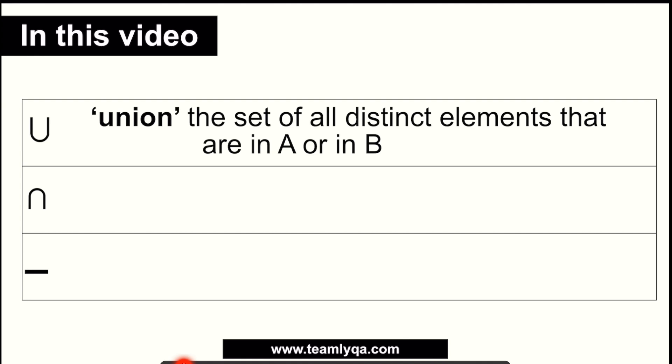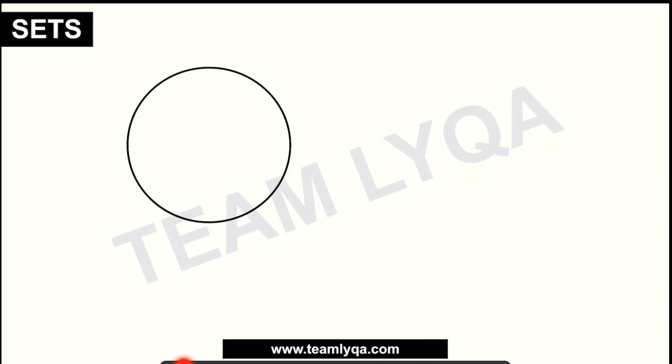We also talked about subset, proper subset, superset, and proper superset in the past video in part 2 of the series. Today, we'll talk about these three. We'll start with this. U stands for union. That's why the symbol looks like that. Remember, U for union. It means it's the set of all distinct elements that are in A or in B.